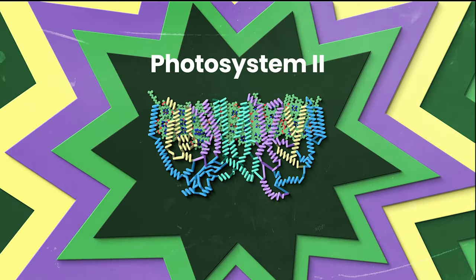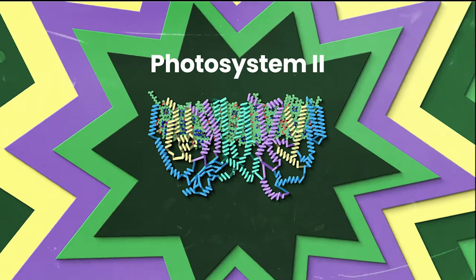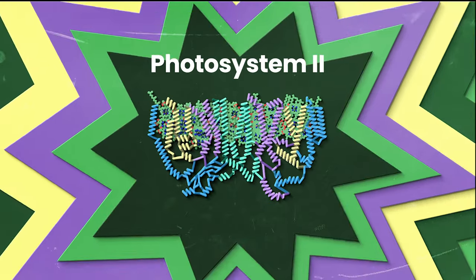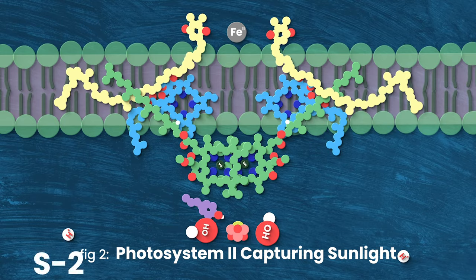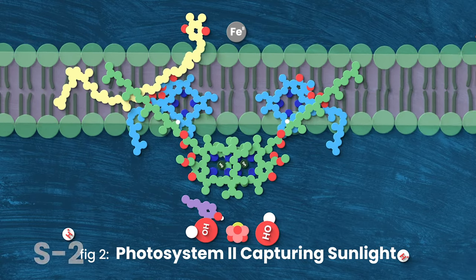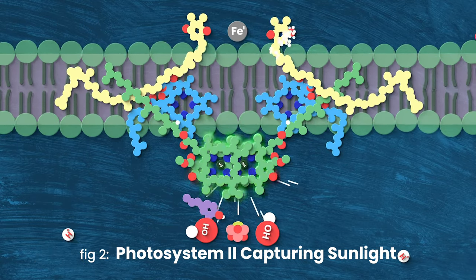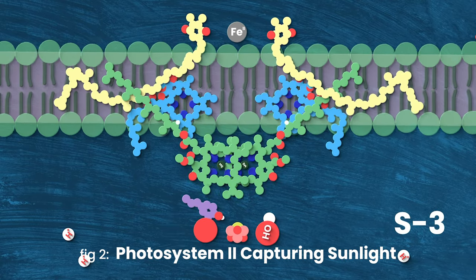In video one, linked above and in the description, we talked about how our first complex, confusingly named photosystem 2, captures energy from sunlight by breaking water apart. It's cool that we crack open water using sunlight, but how do plants eat that? We need a few more steps before this becomes food.